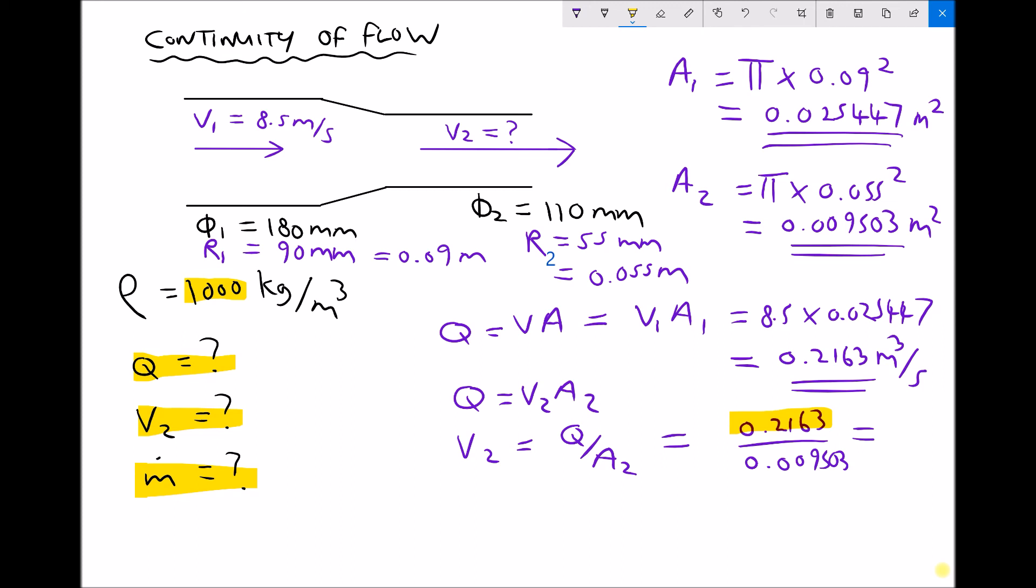And the reason I do this is to eliminate any rounding errors. So I'm going to do answer or 0.2163 divided by 0.009503. And that gives me my velocity at outlet of 22.7612 meters per second. So what we can see is that as the duct has converged, the velocity has increased.